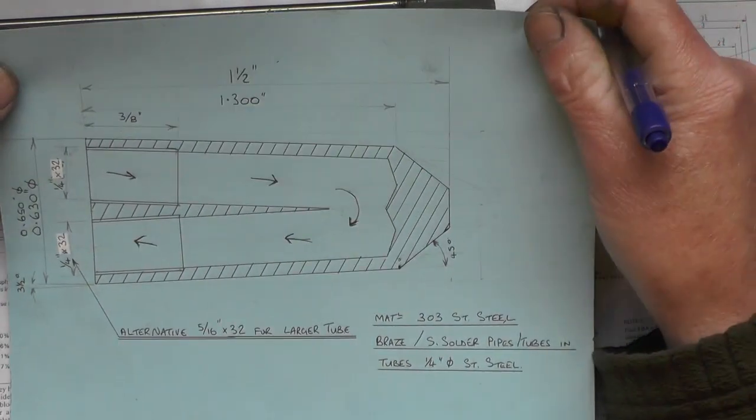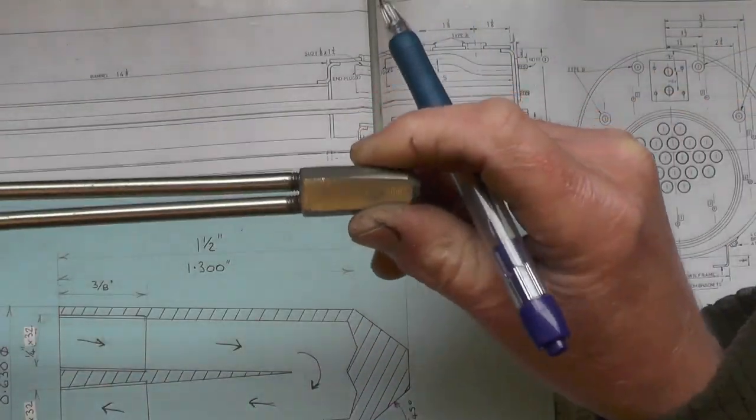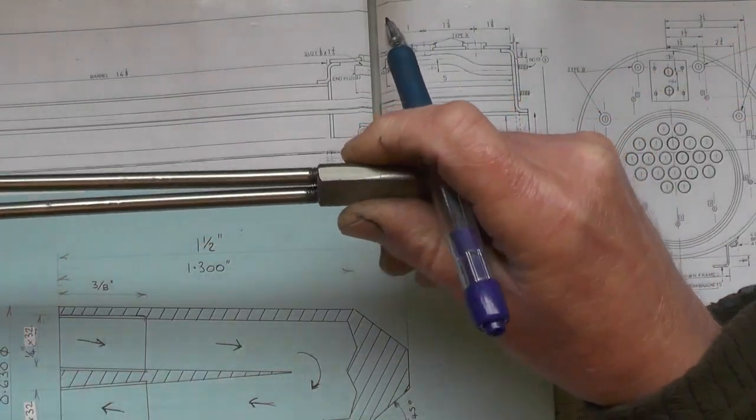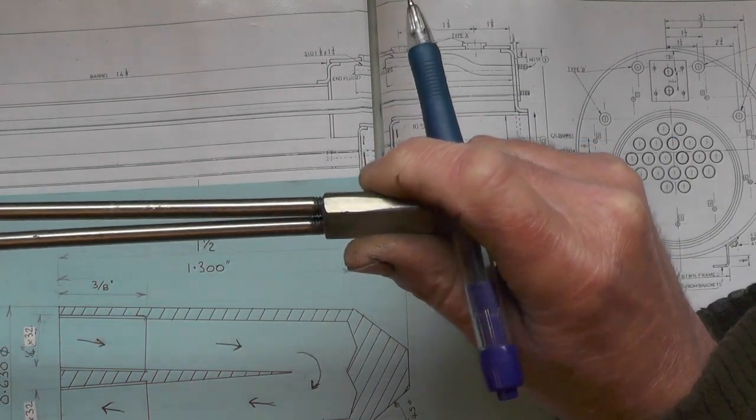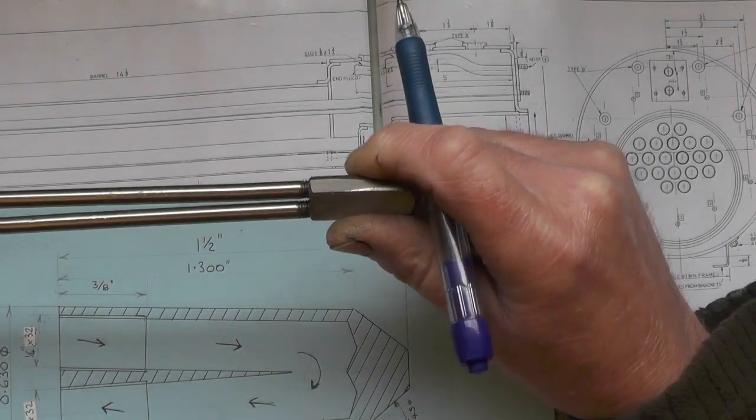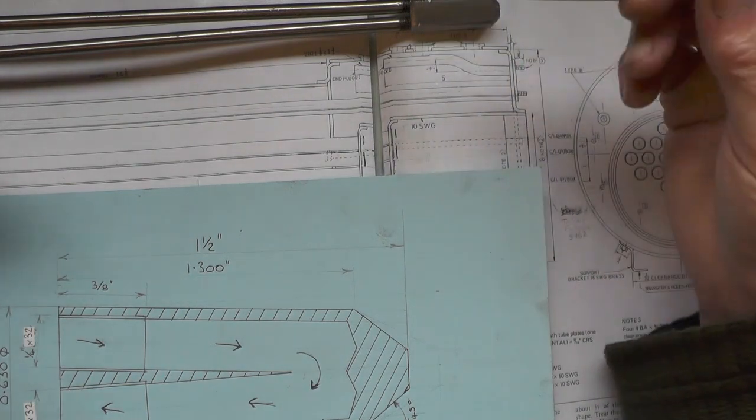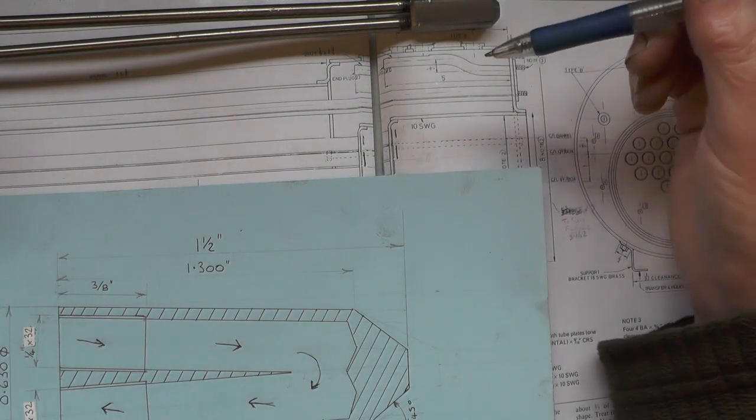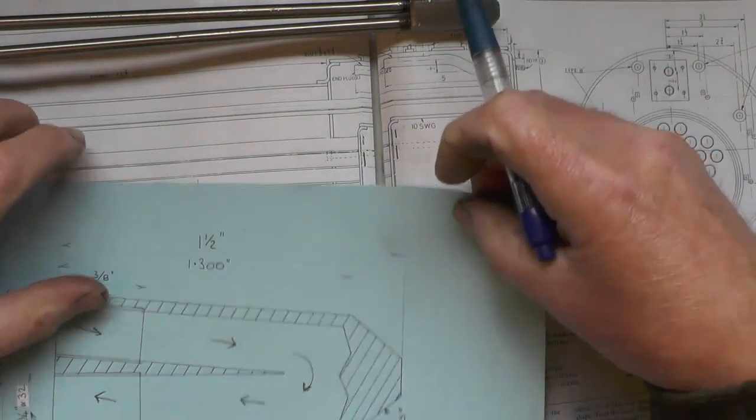Now when I'd done all that, which is here, I suddenly thought: is quarter stainless steel tubing big enough? Because will it allow the quantity of steam that I need? And to be honest, I'm not 100% sure.